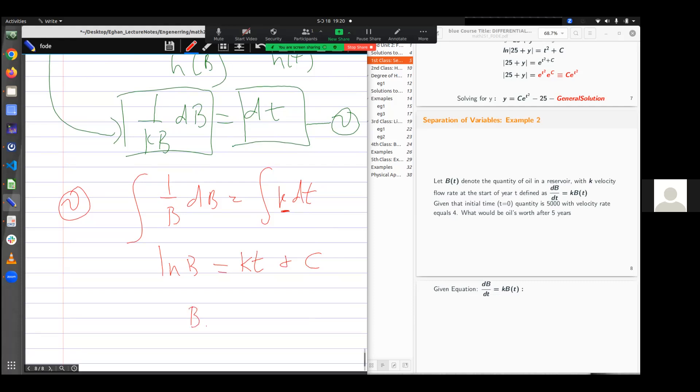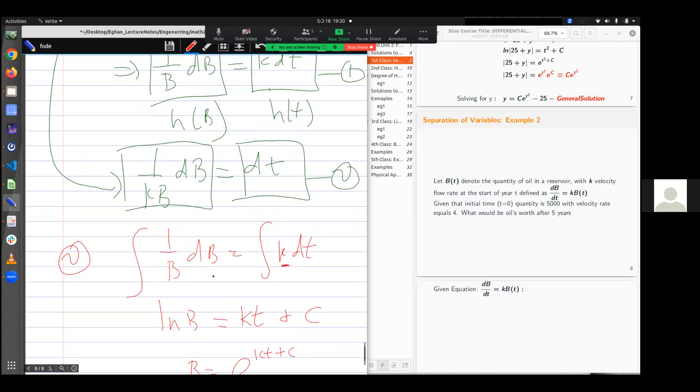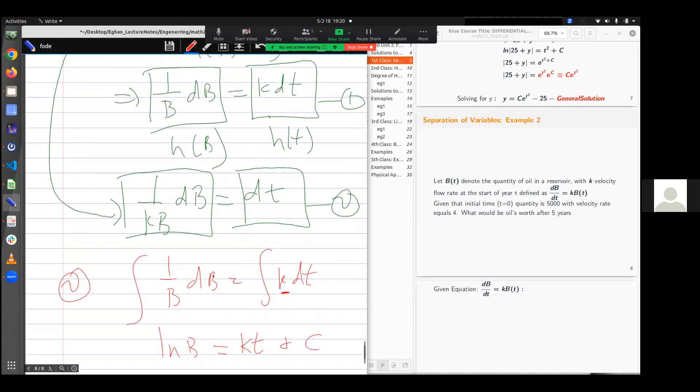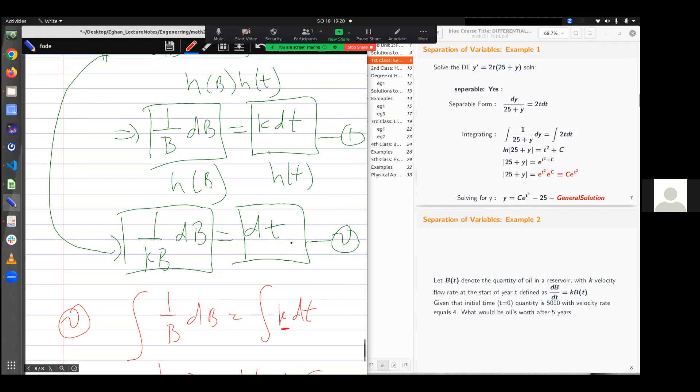My unknown is b. So b becomes exponential(kt + c). Just like for the first example. So it means b with respect to t becomes some m*e^(kt). And this is my solution. So always check if it is separable or not separable. If it's separable, go through the integration and then solve for your unknown. I hope this is well understood.